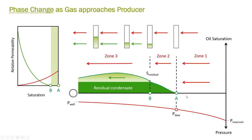In the gas zone, at pressures above the dew point up to the reservoir pressure, only gas is moving — we call it the one-phase zone. As we hit the dew point, condensates start building up, and we call it condensate banking. By creation of this condensate banking, we have a saturation buildup. But because the saturation is below the residual saturation of the condensate, the condensate is not mobile, while the mobility of the gas zone is dropping.